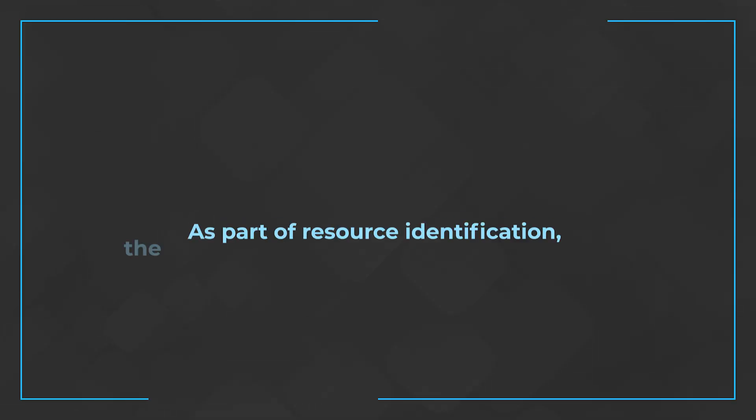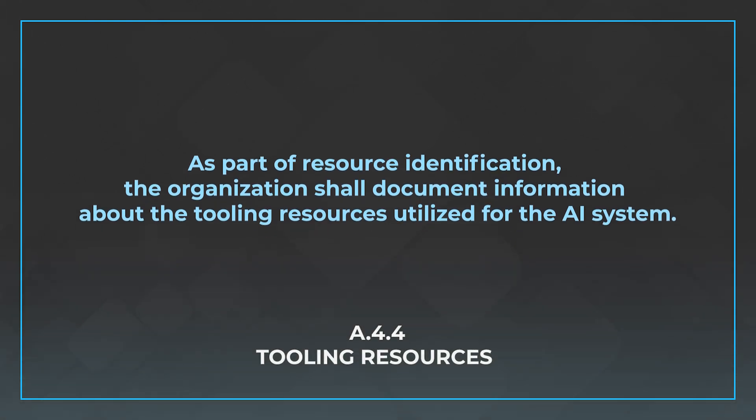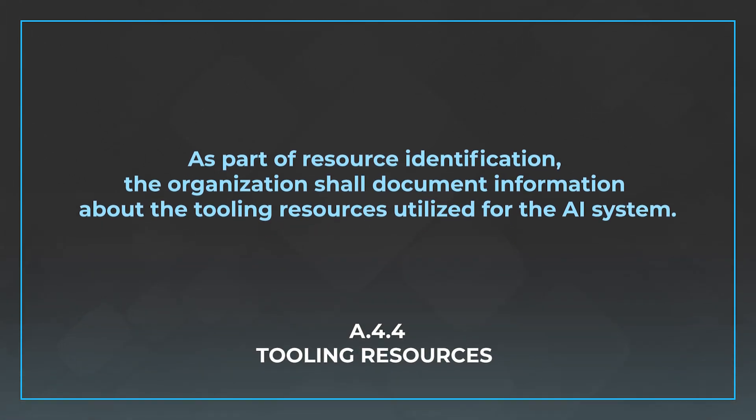A.4.4 talks about tooling resources. These are subcategories of the resource documentation. It says: as part of resource identification the organization shall document information about the tooling resources utilized for the AI system. Spend time thinking about what are the tooling resources you're going to need — the people, processes, and technology in your stack needed to operate this.